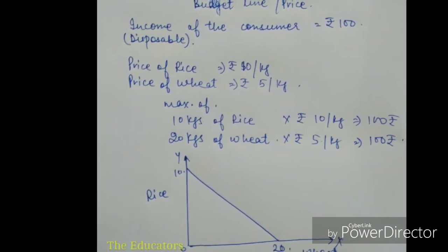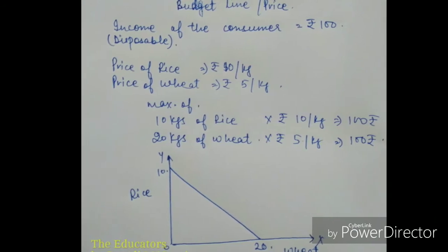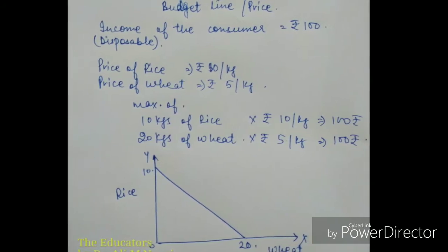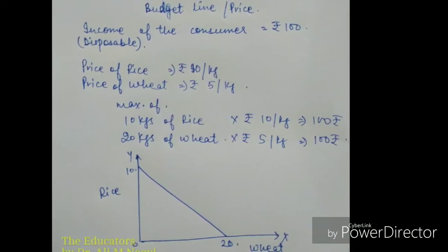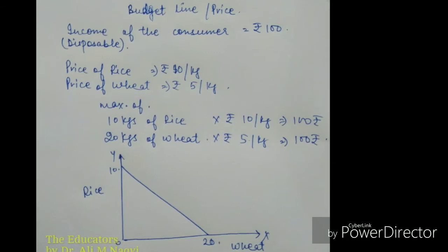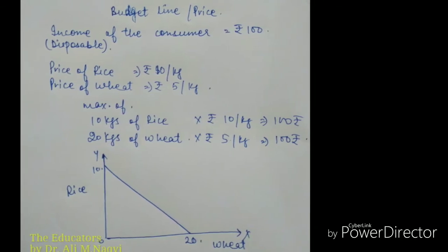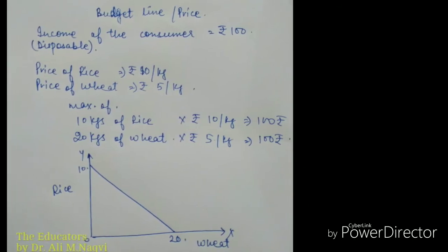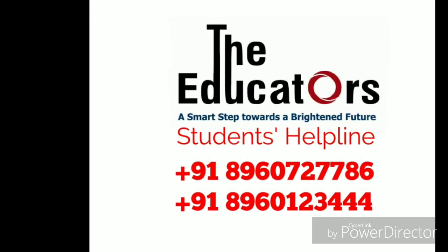With 100 rupees, if we spend the whole amount on rice we can purchase a maximum of 10 kgs of rice, and if spent entirely on wheat, 20 kgs of wheat. Drawing a curve with wheat on the x-axis and rice on the y-axis, a line showing these maximum quantities represents the budget line. Within this budget the consumer can make purchases; beyond it, the consumer cannot.